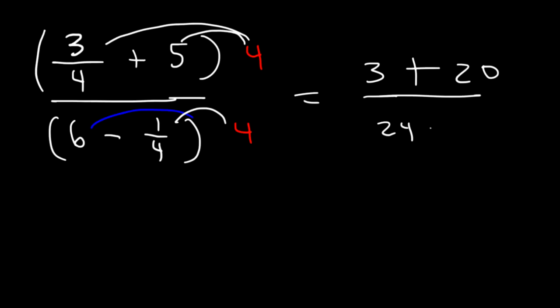And then 4 times 1 fourth is basically 1. So 3 plus 20, that's 23. 24 minus 1 is also 23. 23 divided by 23 is 1.